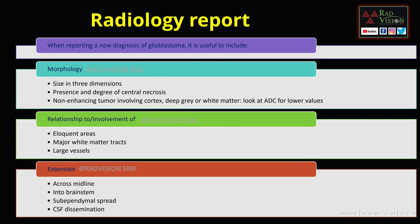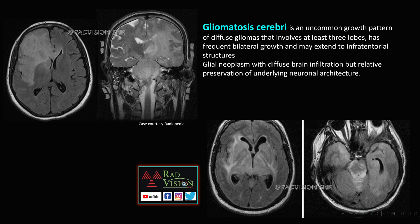Another variant is gliomatosis cerebri, an uncommon growth pattern of diffuse gliomas involving at least three lobes. Cases show a diffuse infiltrative lesion hyperintense on FLAIR in the left cerebral hemisphere extending into the capsulo-ganglionic region, infiltrating the brainstem and reaching infratentorial locations, and bilateral capsulo-ganglionic regions extending into right frontal lobe, bilateral temporal lobes, and brainstem. It has frequent bilateral growth and is a glial neoplasm with diffuse brain infiltration but relative preservation of underlying neuronal architecture.